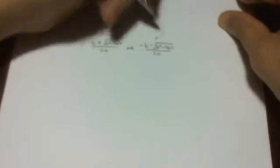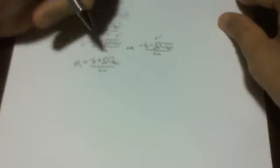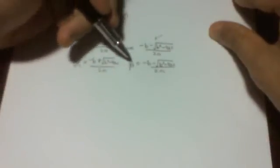Now, this has two answers. We have: minus b plus square root of b squared minus 4ac over 2a, or minus b minus square root of b squared minus 4ac over 2a. So if we let alpha equal the first root and beta equal the second root, we have two roots — alpha and beta.